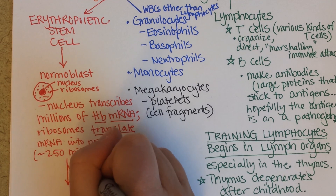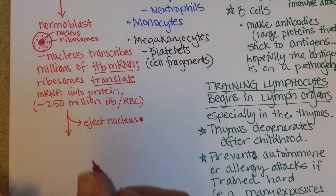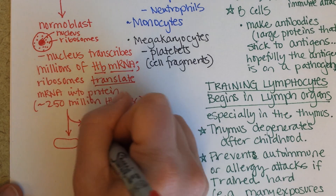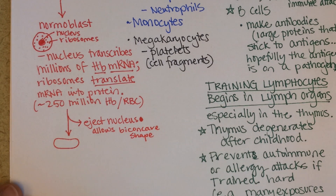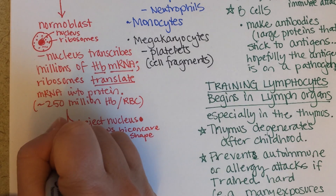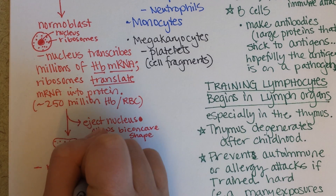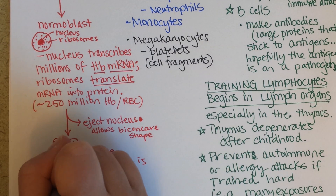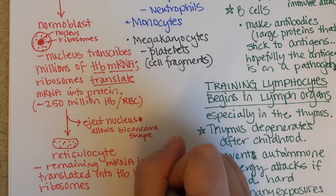The next step involves the ejection of the nucleus. The nucleus is expelled to lighten the red blood cell, and that's where it can start to take on its biconcave shape, making it easier to circulate. But since the DNA is gone, no more transcription can occur. However, there will still be lots of ribosomes finishing up translation. We call this stage a reticulocyte — 'reticule' means a network, and you can see lots of little dots (the ribosomes) within it. The remaining mRNA continues to be translated into hemoglobin by the remaining ribosomes.